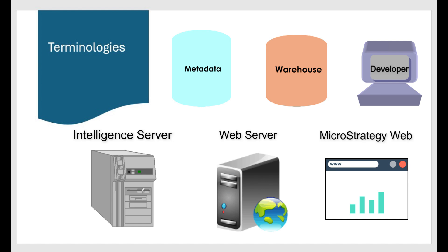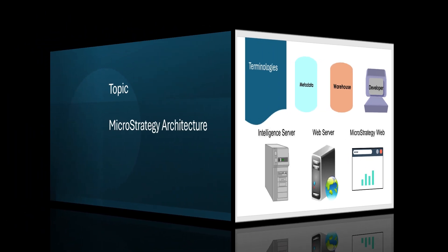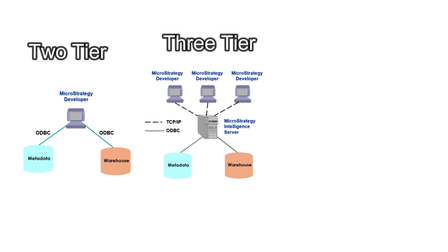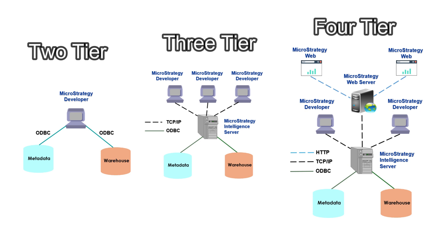Now let's move on to the MicroStrategy architecture. A MicroStrategy architecture is built around two-tier, three-tier, and four-tier connections. In a two-tier architecture there are two tiers, in a three-tier architecture there are three tiers, and in a four-tier architecture there are four tiers. Let's discuss about these tiers in detail.